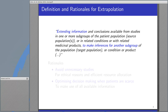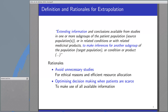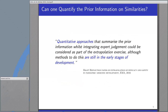The rationale is clear: we want to avoid unnecessary studies for ethical reasons and efficient resource allocation, and we want to optimize decision making when patients are scarce. So let's use all available information. Can one quantify the prior information on similarities? The draft notes that such quantitative approaches for extrapolation could be of interest. However, we are still in the early days of developing and applying such quantitative methods, and I would like to sketch one attempt to develop such a quantitative approach.